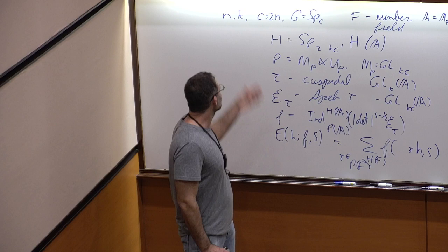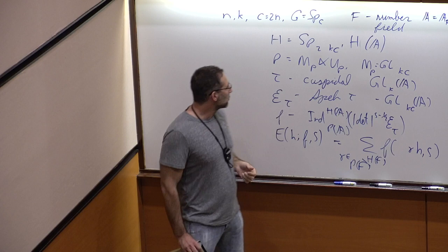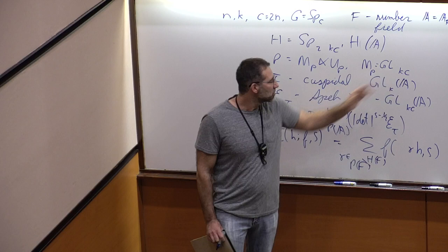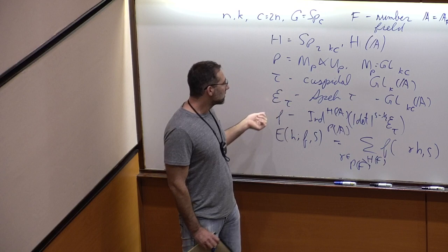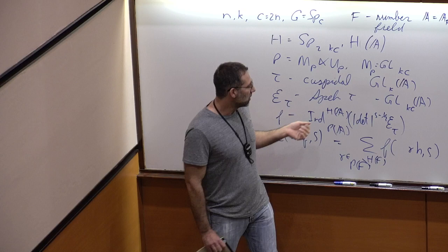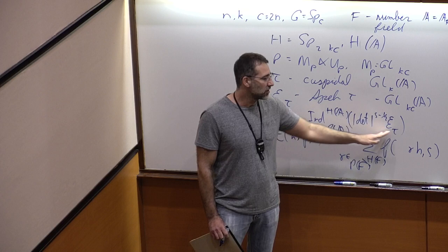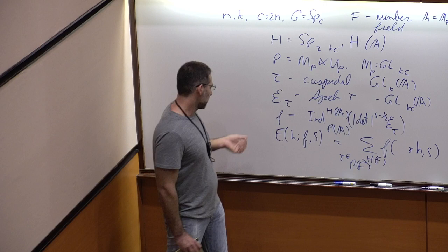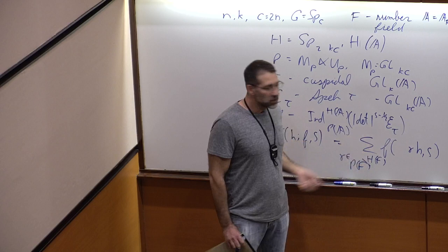These ingredients describe our doubling construction. We have F a number field, ring of adeles, N and K positive integers. Throughout I'll set C to be 2N and G will be the group SP_C. We have the group H, a larger symplectic group, and we choose a Siegel parabolic subgroup P. The Levi part is isomorphic to GL_K times C, and we have a cuspidal irreducible automorphic representation tau of GL_K.